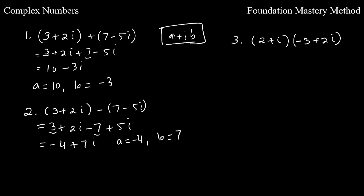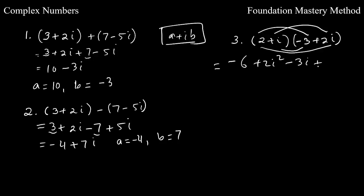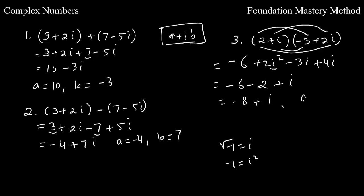For multiplication of complex numbers, you can use distribution or FOIL. For example: 2 times negative 3 is negative 6, then i times those terms gives positive 2i squared, then negative 3i, then plus 4i. Remember by definition the square root of negative 1 is i, so squaring both sides gives i squared equals negative 1. Substituting: negative 2 times negative 1 is positive 2, combined with the i terms gives negative 8 plus i. So a is negative 8 and b is 1.